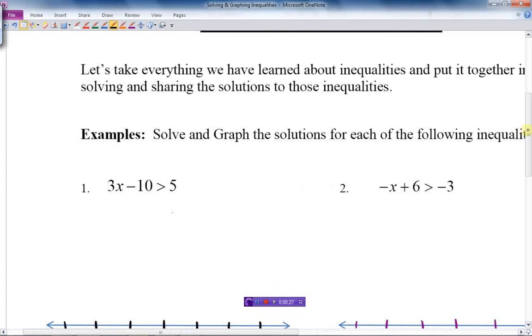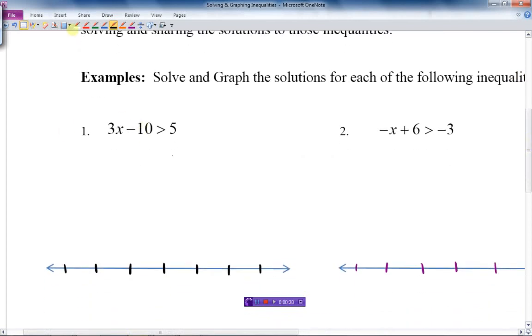We want to isolate the x, so we need to get rid of the 3 and the negative 10. Let's get rid of the 10 first. Plus 10, since we're minus 10, we do the opposite, and we get 3x. Those are gone, 10 is gone, and we got 15. Last step here, I'm going to get rid of the 3, so I have to divide by 3 since it's multiplying the x. And I get x is greater than 5.